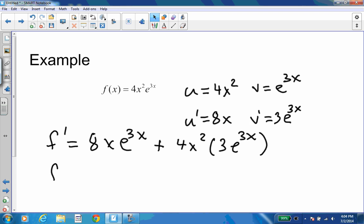If I do a little simplifying algebra, eight x e to the three x plus twelve x squared e to the three x is a perfectly good answer, but if we want to factor it out, there's a lot of common terms.